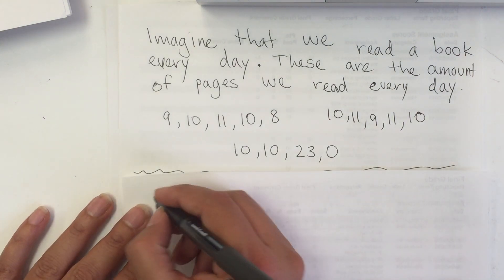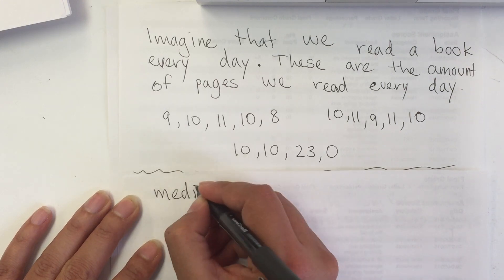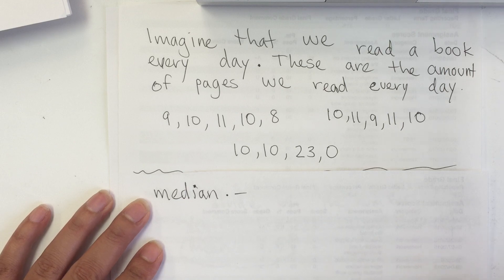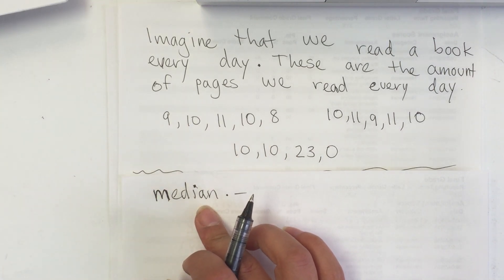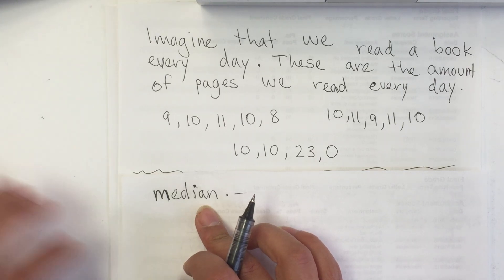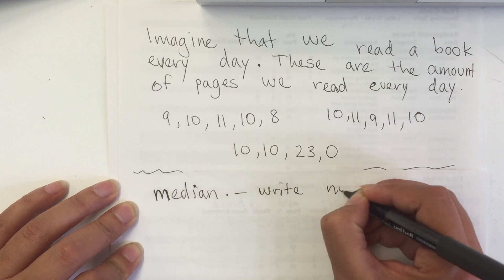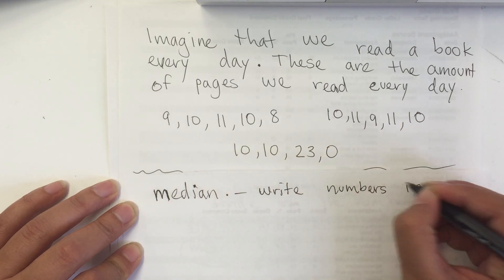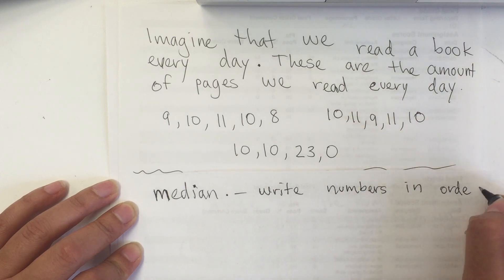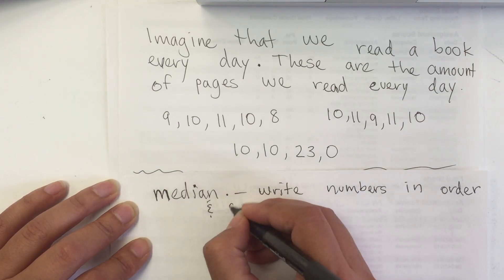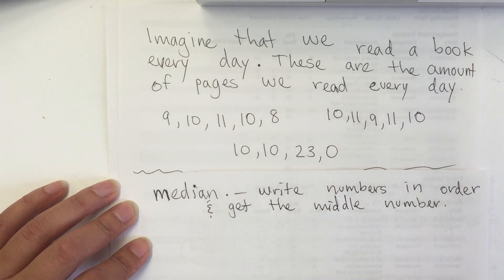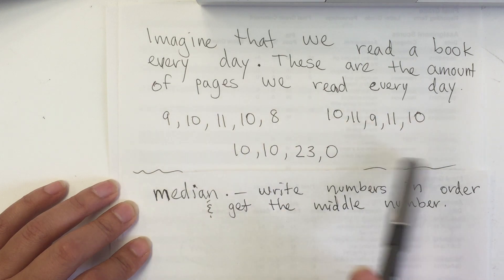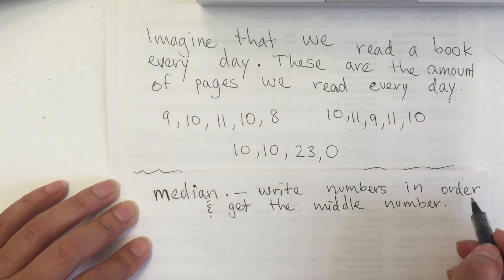Now I'm going to show you the median. When I think about the median, I think of the middle brother. To find the middle brother, you need to put the numbers in order — from smallest to greatest, or from greatest to smallest, it doesn't matter, but usually we write from smallest to greatest. So I'm going to rewrite this data in order and get the middle number. That's very important — if you don't do that, it's not going to work.